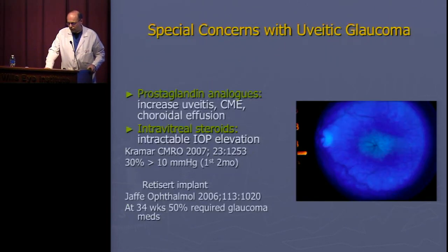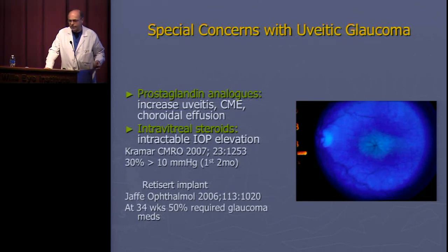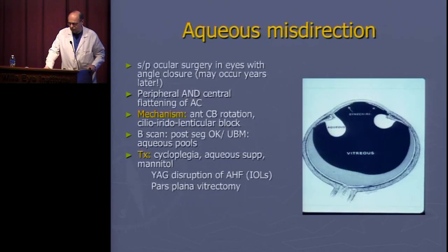Special concerns with uveitis: prostaglandins have been associated with increased inflammation, CME, and choroidal effusions. Intravitreal steroids often cause secondary pressure elevation — not unusual at all. With sustained-release steroid implants placed inside the eye, there is a very high rate — up to 50% — requiring some form of glaucoma treatment, whether topical medications or surgery.